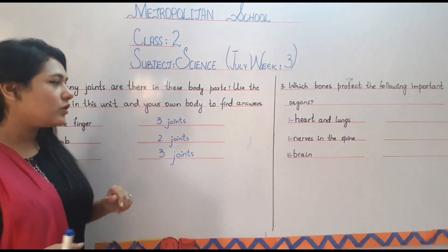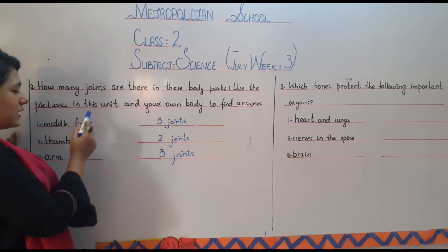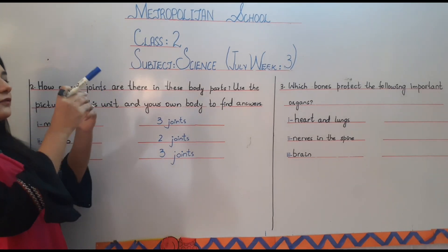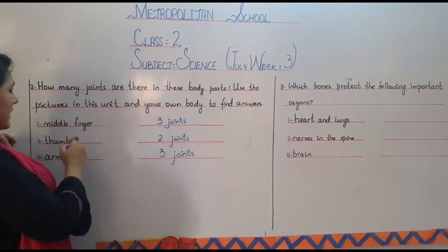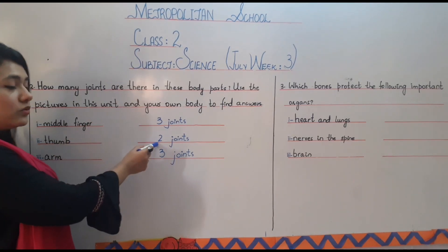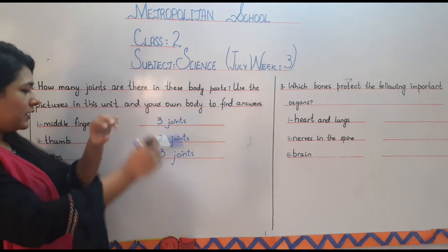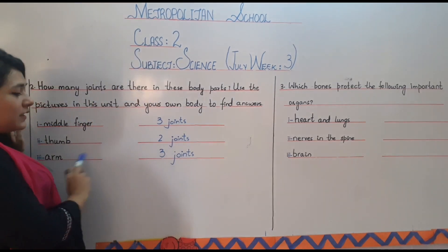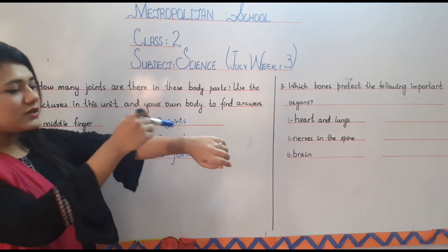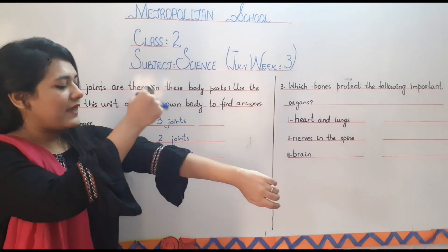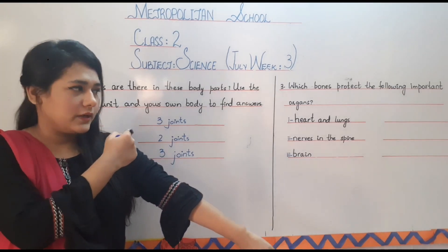Let's recap the second exercise one more time. There are three joints in our middle finger. In our thumb there are two joints — one here and one here. Then there are three joints in our arm: first the wrist joint, then the elbow joint, and last our shoulder joint.